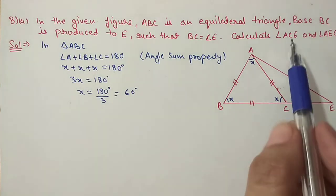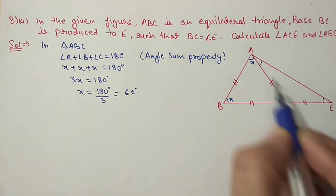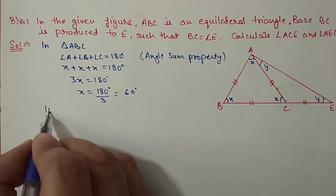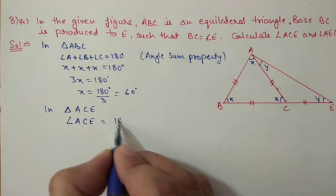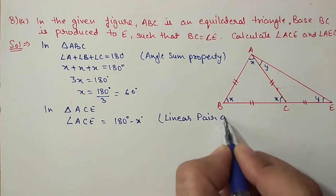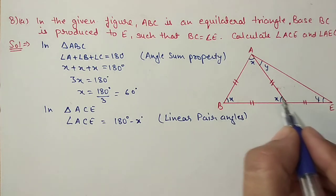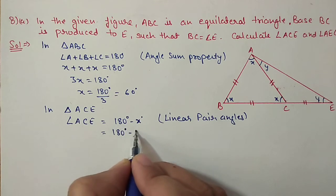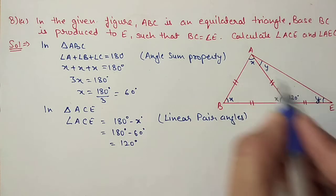x equals 180 divided by 3, which equals 60 degrees. Now we have to find angle ACE. We will find it using the linear pair: angle ACE is equal to 180 minus x. Because x and this angle are on a straight line, their sum is 180 degrees. So 180 minus 60 gives 120 degrees. This angle ACE is 120 degrees.